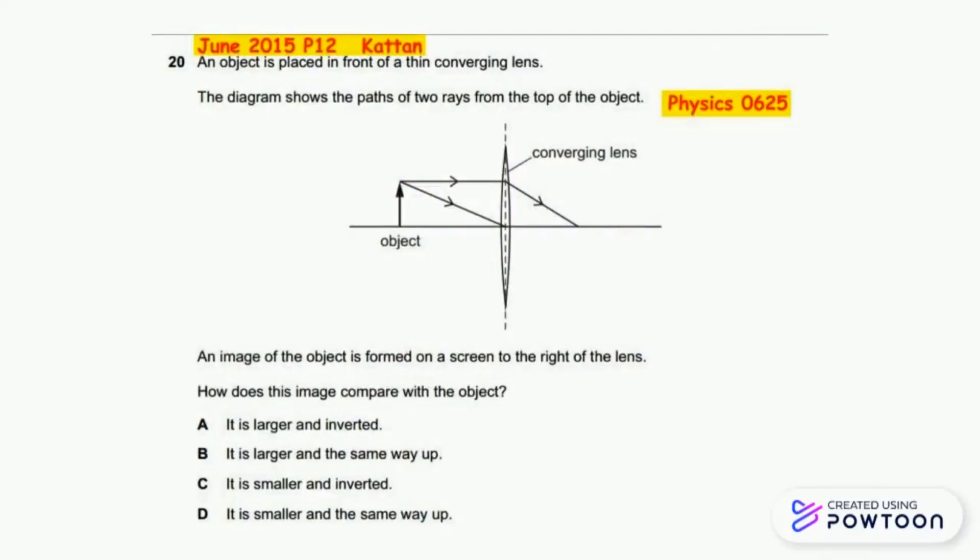Hi guys and welcome to our physics series. Today we have a June 2015 paper 12 question 20 for Physics 0625 Cambridge. An object is placed in front of a thin converging lens.